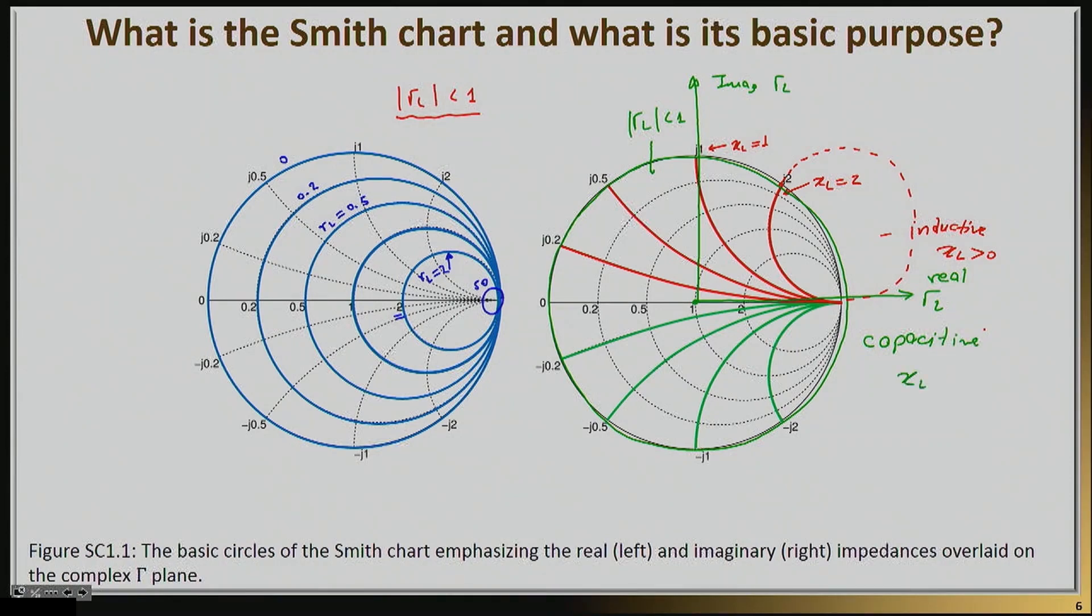And if that happens, then I'm actually looking at the bottom half of the Smith chart. So for example, the XL that you see here has a value of negative 0.5. The XL that represents this circle has a value of negative 1, and so on and so forth.